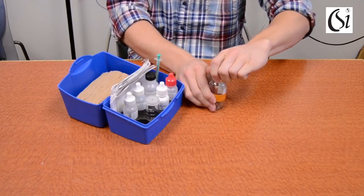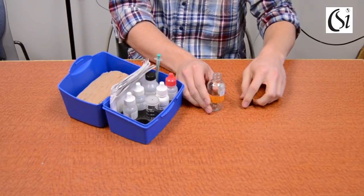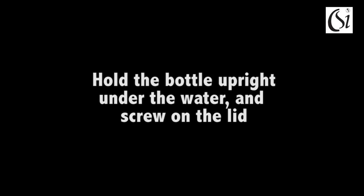Fill water sampling bottle completely with no air bubbles. The easiest way to do this is to hold the bottle upright under water and screw on the lid.